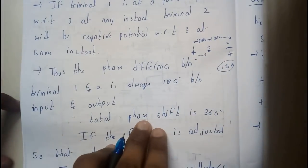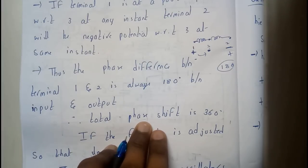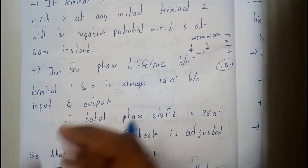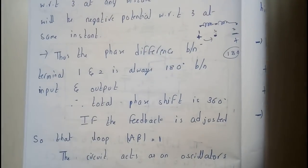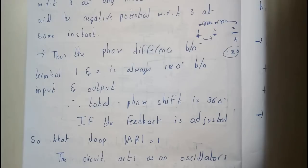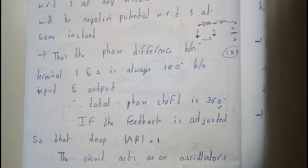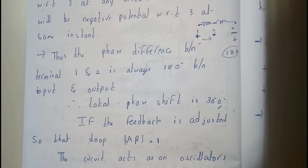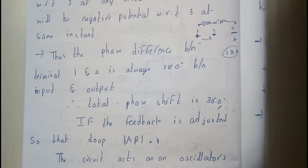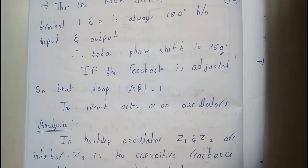As previously discussed, we need a complete phase shift of 360 degrees to form a perfect oscillator. From the tank circuit we get 180 degrees, and the remaining 180 degrees is provided by the CE amplifier, giving a total of 360 degrees phase shift. The other condition is that the open loop gain must equal 1 — that is, |Aβ| = 1 — only then will the circuit act as an oscillator.